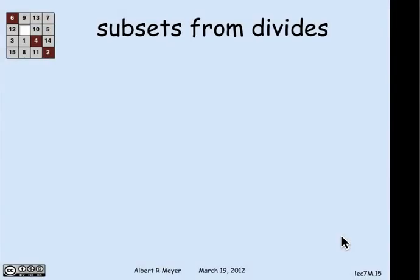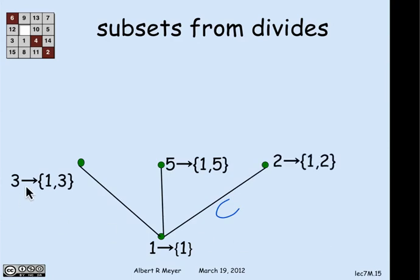And let's just illustrate that by the example of how do you turn the divides relation into the subset relation. Well, the smallest element in the proper divides example was the number 1, and I'm going to map it to the set consisting of 1, which is all of the elements that properly divide 1 along with 1. And then I'm going to map the number 3 to all of the elements that properly divide 3 along with 3, and that is 1 and 3. 5 maps to 1 and 5, 2 maps to 1 and 2.